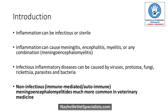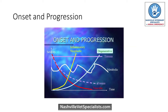An important thing to be aware of — and a common question I still get — is how often we see infections in the nervous system. It's not common at all. It's much more common that we're dealing with non-infectious inflammatory diseases. Most inflammatory diseases have an acute onset and a progressive nature. Vascular diseases and trauma can have an acute onset but aren't progressive. The other condition that tends to have a similar onset and progression would be neoplasia, so that's often a top differential.